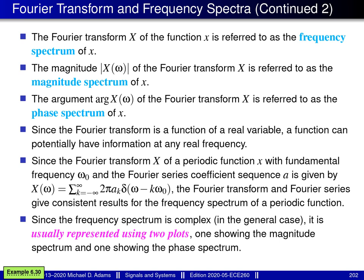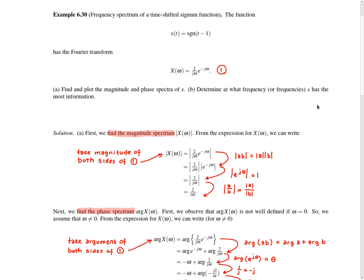I'd like to consider an example to further illustrate the concept of frequency spectra — specifically example 6.30. In this example, we're given the function little x defined by a particular equation, and we're told this function has the Fourier transform big X given by another particular equation. We're asked to do two things: in part A, find and plot the magnitude and phase spectra of little x; and in part B, determine at what frequency or frequencies the function little x has the most information.